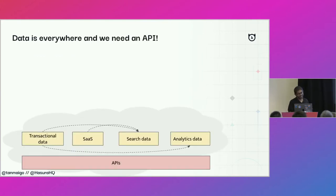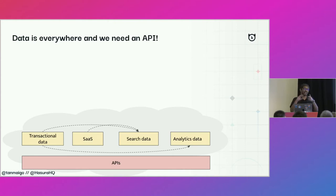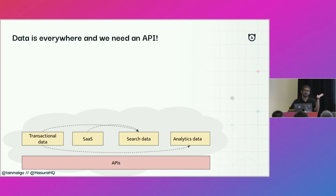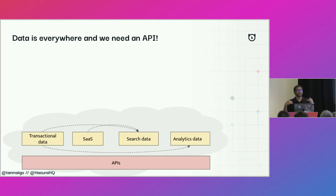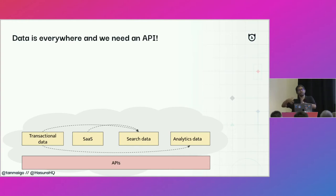So why do we need a data API? Data is everywhere — it's just exploding. It keeps increasing in volume, in the types of data we have — whether relational, transactional, graph, exposed by a SaaS service, search, or time series. And it's also increasing in workloads and use cases. As we do more with data, unless somebody can use that data — take it to users, give it to a different developer, ship it outside the organization — it's not useful. You need to ship it or deliver it somewhere. That's where the need for an API comes in.